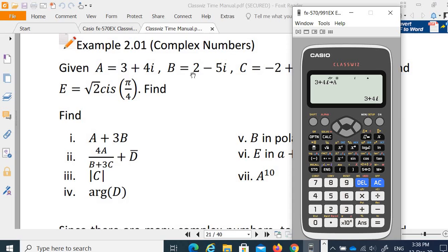Now I would like to store 2 minus 5i into B. So 2 minus 5i, shift STO. B is here on top of this button. So 2 minus 5i is stored in B already.